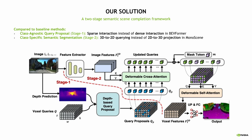Here is the detailed illustration of our framework. Our input can be either a single RGB image or a set of images. We utilize existing depth models to obtain image depth, and we use this depth to select a subset of query proposals from the predefined complete voxel queries. These selected query proposals, denoted by blue tokens in the figure, interact with camera images and are then updated. Finally, we add mask embeddings to complete the 3D representation, utilize deformable self-attention to propagate the information, and use an MLP to obtain the final segmentation map.